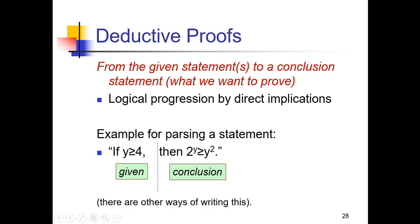We have if y ≥ 4, it is given, and in conclusion we can say that 2^y ≥ y². What that means? There are other ways of writing the same equations.